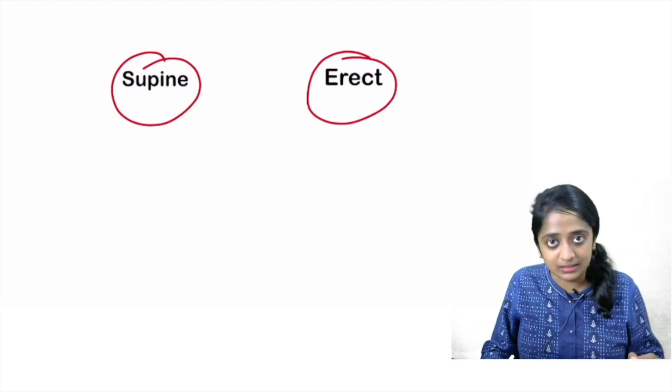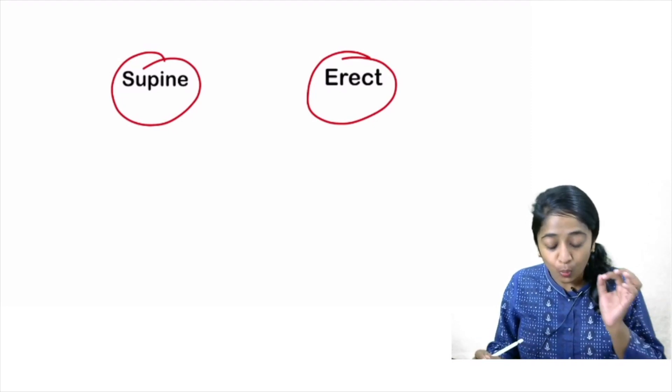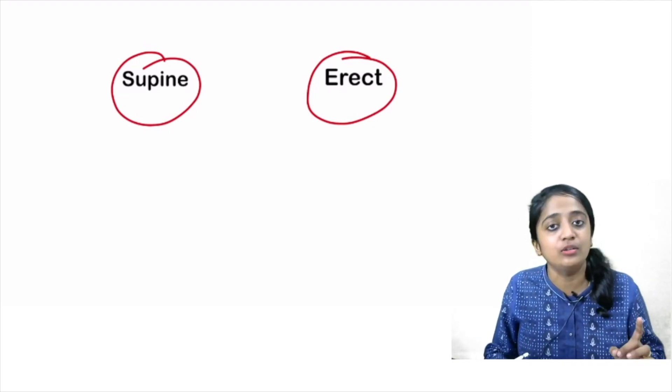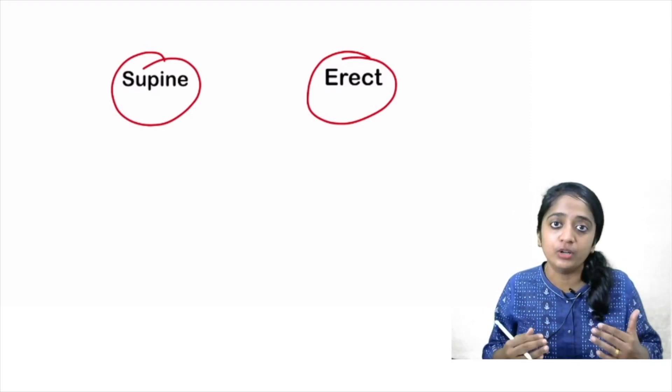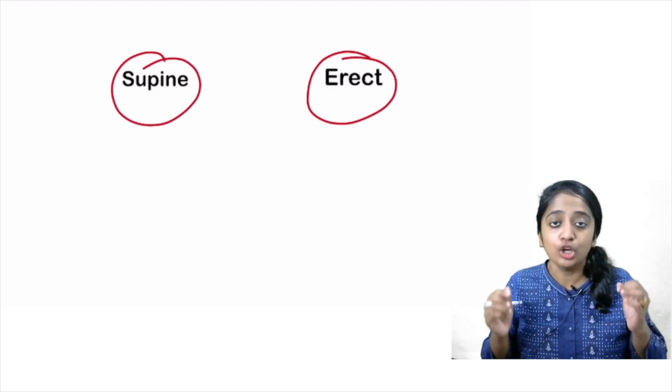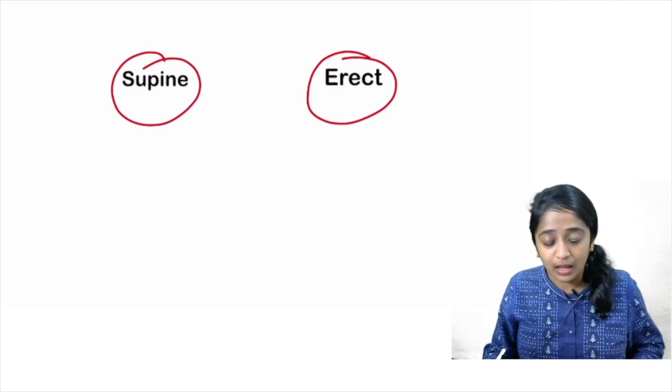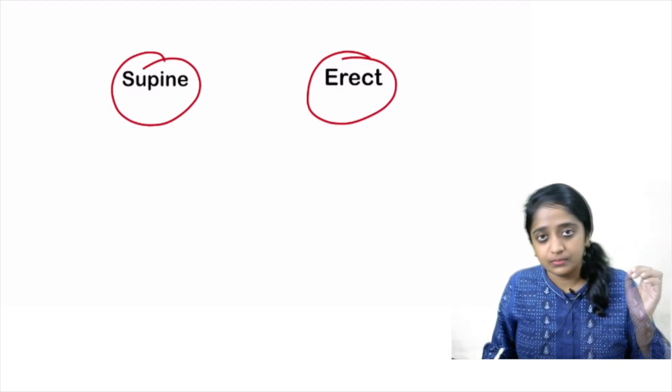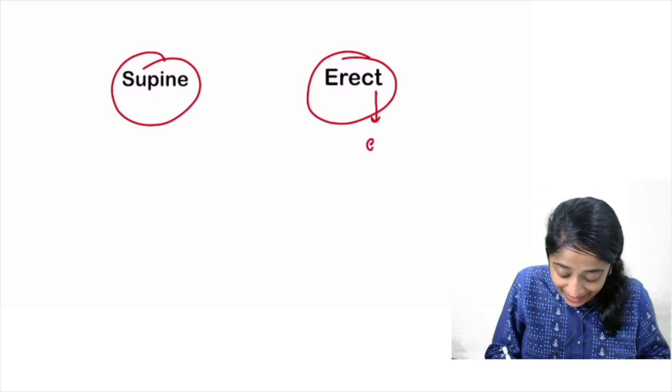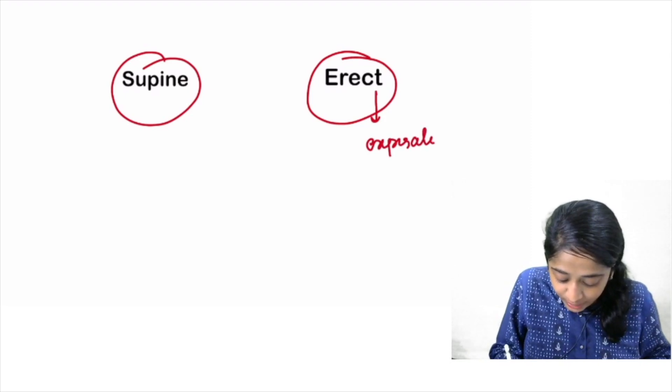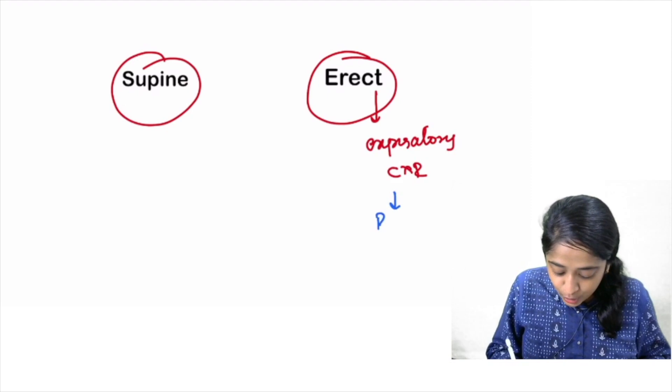Erect view is a classic one and which particular phase of respiration will you look for in erect view to diagnose pneumothorax? If apparently an inspiratory radiograph, that is a common radiograph that we normally take, good inspiration of chest radiograph. If apparently it is normal and you have still strong suspicion of pneumothorax, what do you have to do? You have to go for expiratory erect chest radiograph to detect subtle pneumothorax.